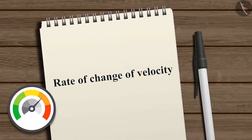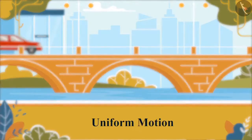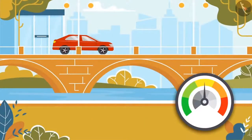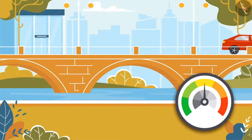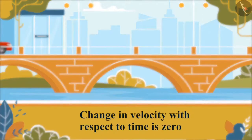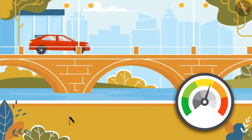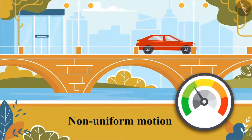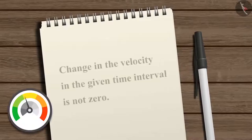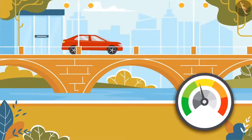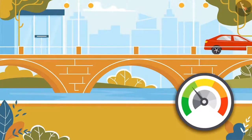Now let's study the rate of change of velocity. Suppose a car is in uniform motion moving on a straight road — its velocity doesn't vary with time and hence remains constant. The change in velocity with respect to time is zero. Now consider if the motion of the car is non-uniform and its velocity varies with time. Thus, the change in velocity in the given time interval is not zero.